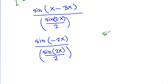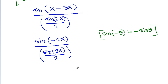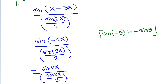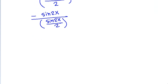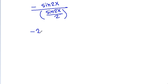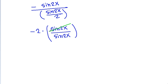Using the identity sin(minus theta) equals minus sin theta, this becomes minus sin 2x divided by sin 2x divided by 2, which simplifies to minus sin 2x times 2 divided by sin 2x. The sin 2x cancels, giving us the answer minus 2.